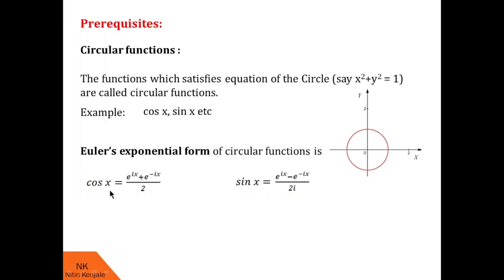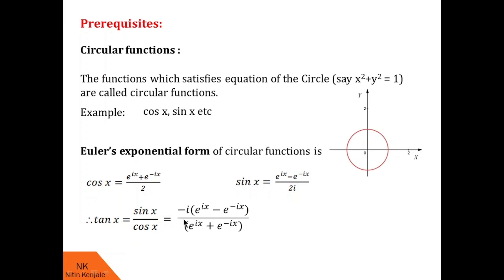From the sin x and cos x exponential forms, one can find the tan x exponential form. So tan x can be given by sin x upon cos x, that is minus i into e raised to ix minus e raised to minus ix upon e raised to ix plus e raised to minus ix. You can pause the video and check the calculation.